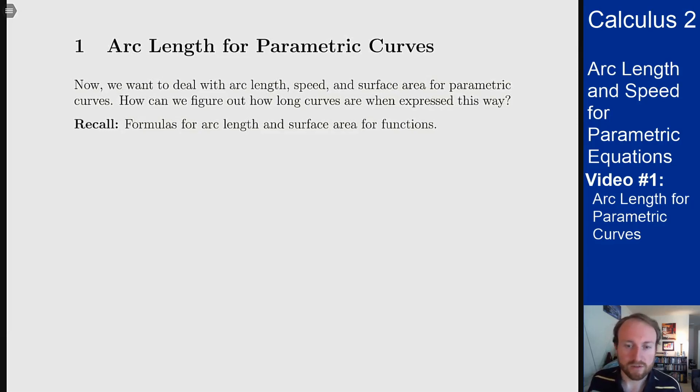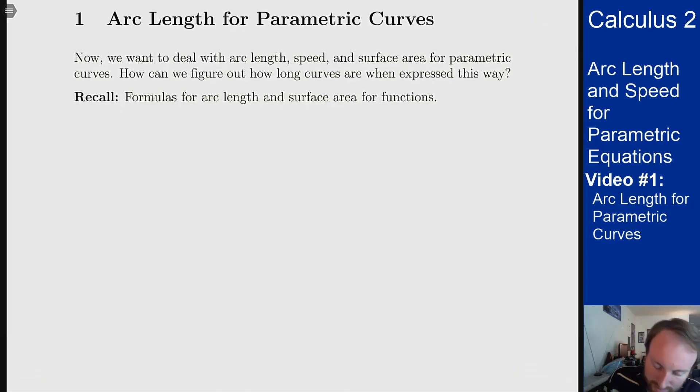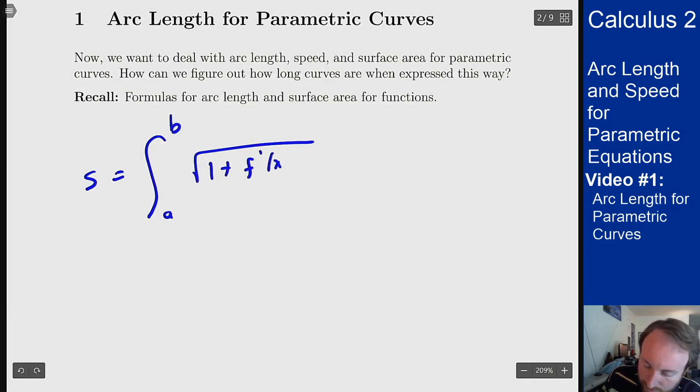So how can we use parametric equations to also compute arc length and surface area? Let's look back to the formulas we had for arc length and surface area before. Our arc length formula was s is the integral from a to b, square root 1 plus f prime of x squared dx. Our surface area was similar but we had a 2π in front along with a copy of the function in front because that was the radius of the cylinder we're using to find the surface area.